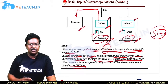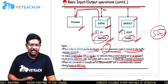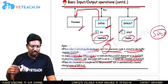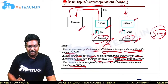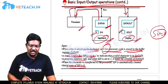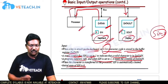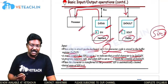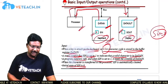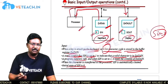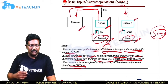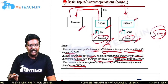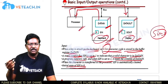Similarly, when performing the output operation, the SOUT flag is checked. After checking the SOUT flag, we perform the output operation, which means transferring data from the processor to the output device. Whenever SIN is equal to 1, the processor considers the input device ready and starts transferring data from the keyboard to the processor. If the processor wants to transfer data to the output device, it checks the SOUT flag, and if it is set to 1, it transfers the data.